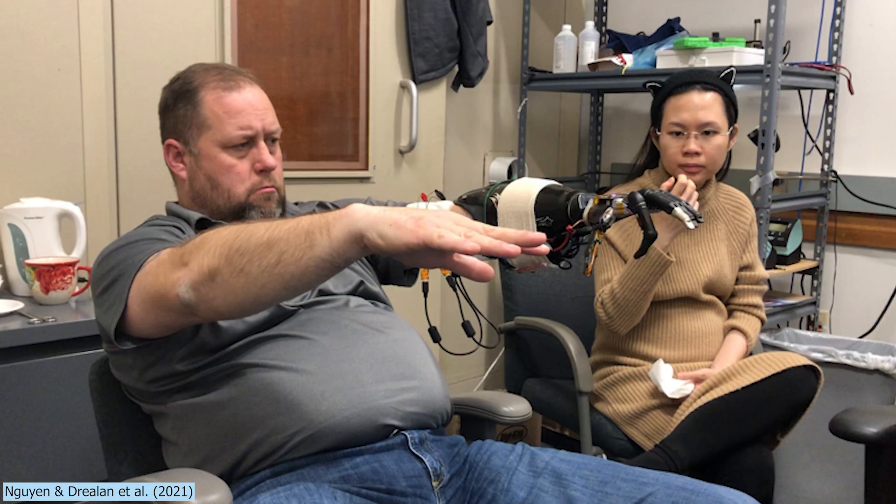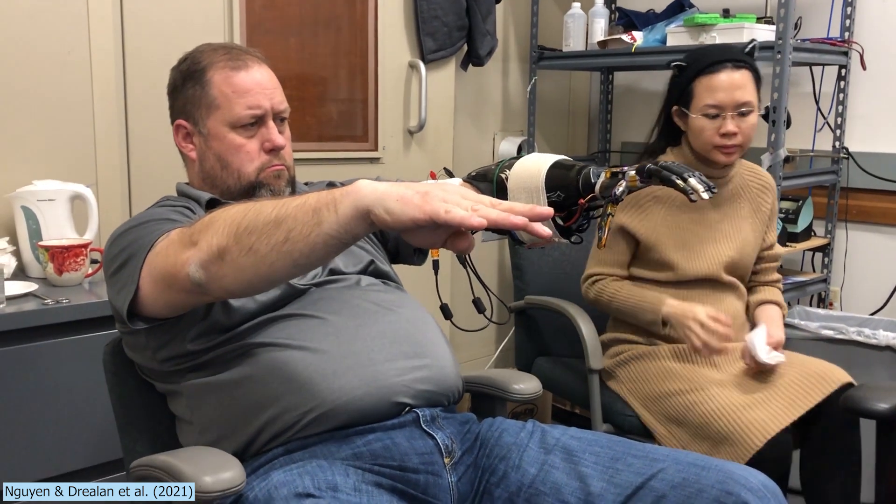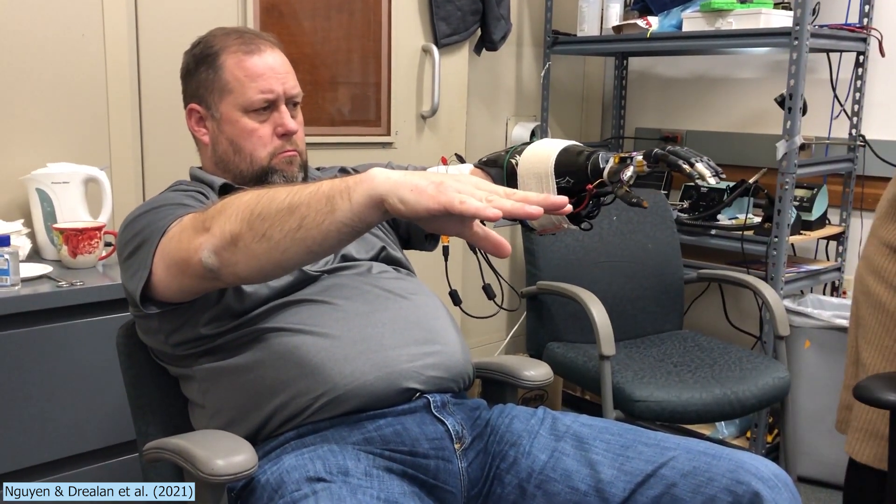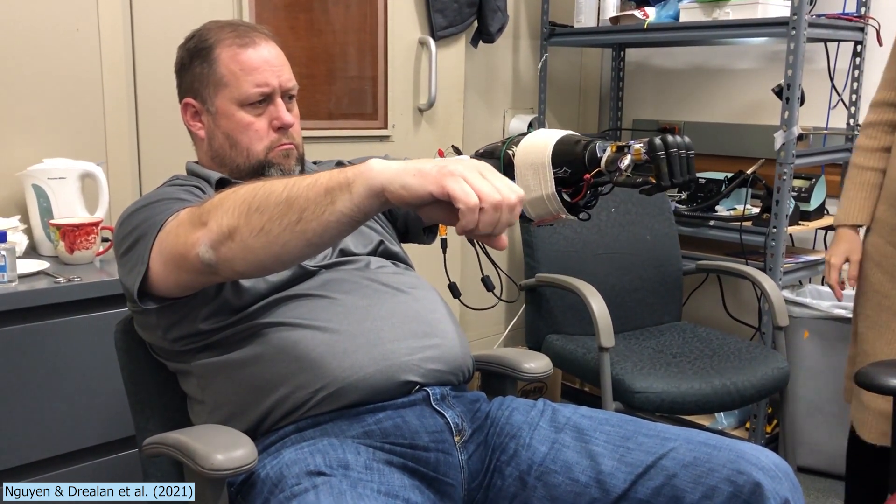This new paper applies deep learning to a neuroprosthetic hand to allow real-time control of individual finger movements, all done directly within the arm itself. With as little as 50 to 120 milliseconds of latency and up to 99% accuracy.